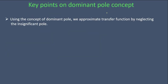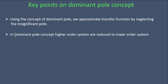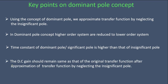Key points of dominant pole: First, using the concept, we approximate the transfer function by neglecting the insignificant pole. Second, higher-order systems are reduced to lower-order systems. Third, the time constant of the dominant or significant pole is higher than that of the insignificant pole. Fourth, the DC gain must remain the same as the original transfer function even after approximation.